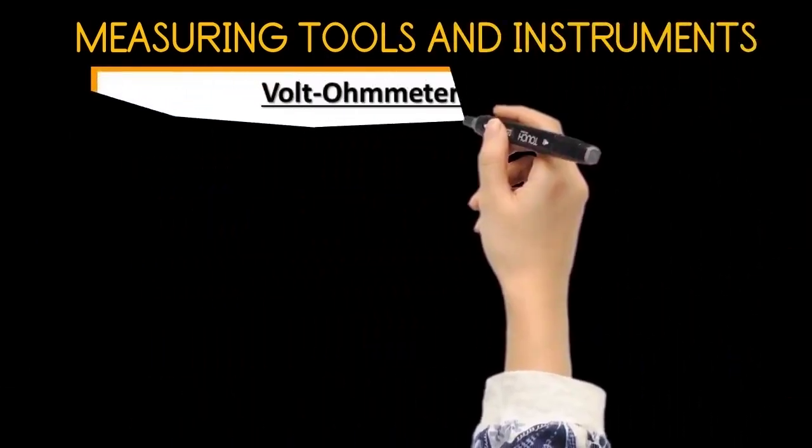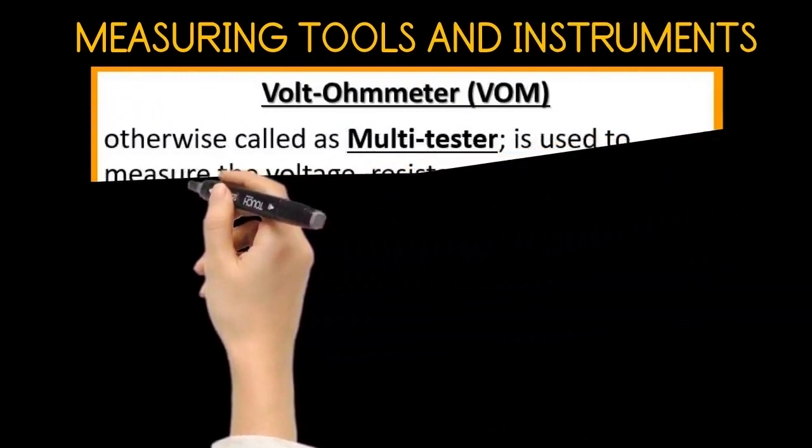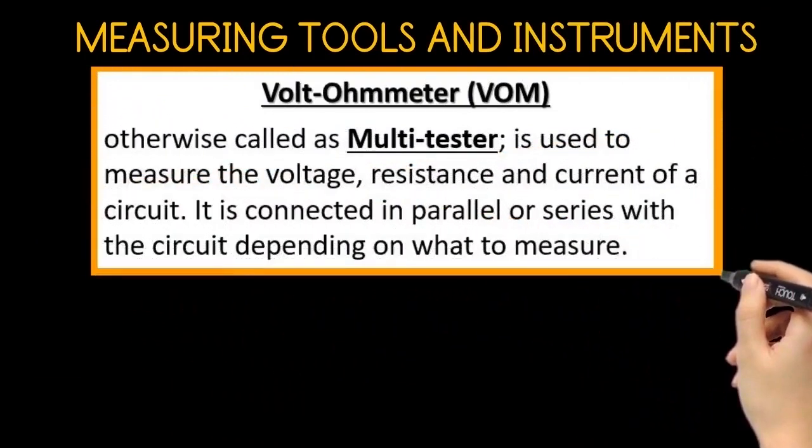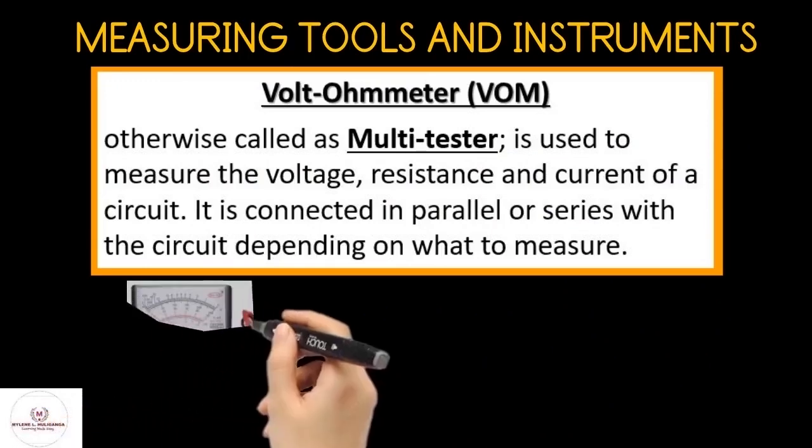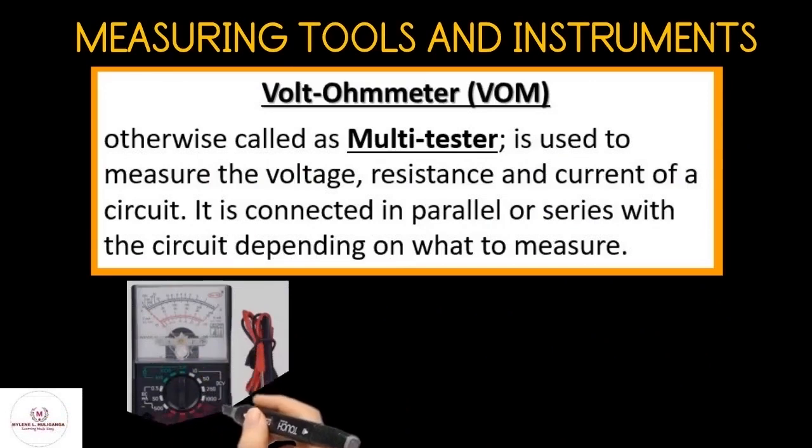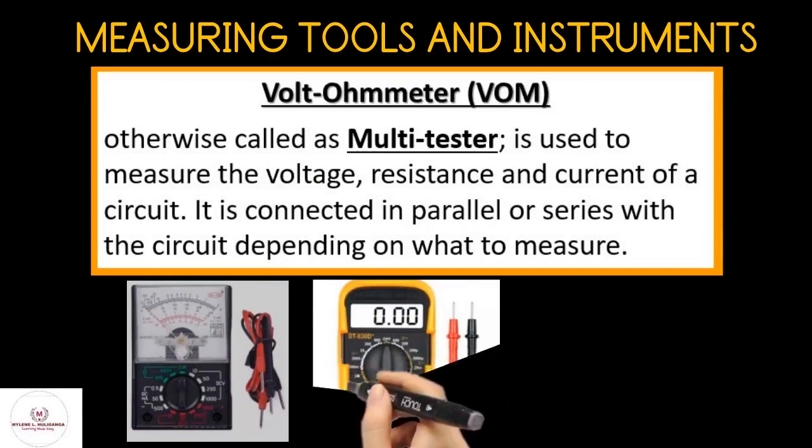The volt ohmmeter, otherwise known as multi-tester. The volt ohmmeter is used to measure the voltage, the resistance, and the current of a circuit. It is connected in parallel or series with the circuit depending on what to measure. Here are some examples of volt ohmmeter or multi-tester.